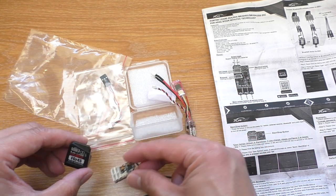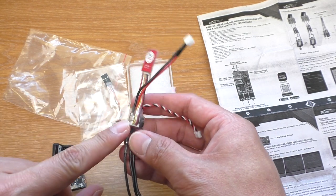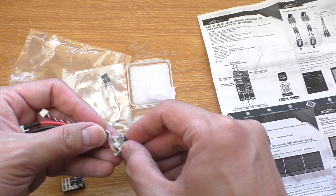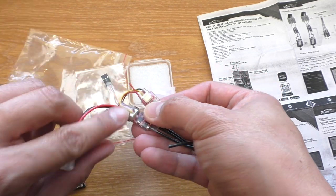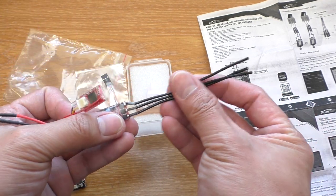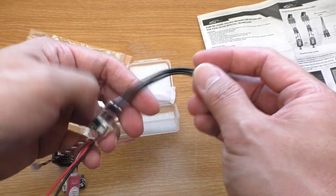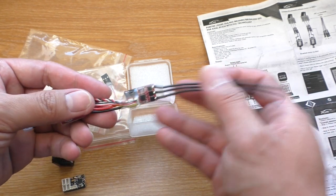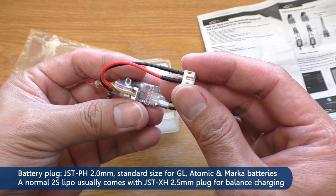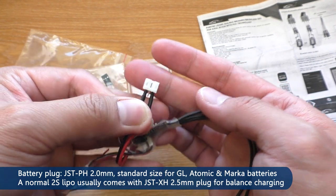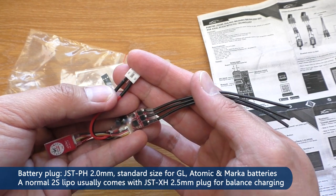It comes in a shrink wrap, so if you want to change the plug you're going to have to cut this off. Also if you want to remove the Bluetooth to save weight, you're going to have to cut the shrink wrap off. It comes with no motor plug, so you can either solder the wires directly to the motor or you can solder some plugs to it. What I'll normally use is the two millimeter banana plug. Here's the battery plug, it comes with a JST PH 2 millimeter plug.